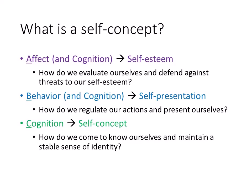Affect is represented by self-esteem — how we feel about ourselves, how we evaluate ourselves, enhance our self-image, and defend against threats to our self-esteem. Behavior is represented by self-presentation — how we manage the way we present ourselves to the world and regulate our actions according to interpersonal demands. Cognition is represented by the self-concept — how we think and what we believe about ourselves, how we come to know ourselves, develop a self-concept, and maintain a stable sense of identity.